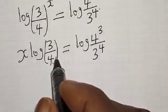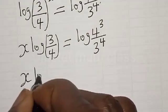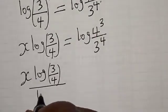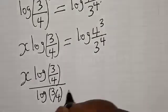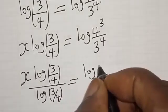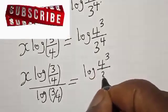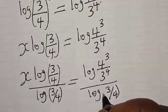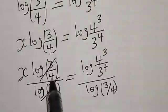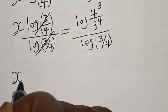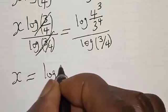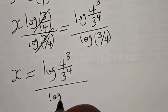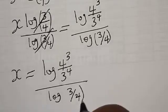Let's divide both sides by log(3/4). Then log(3/4) cancels on the left, and we have x is equal to log of (4 raised to power 3 divided by 3 raised to power 4) divided by log(3/4).